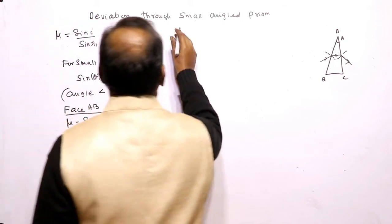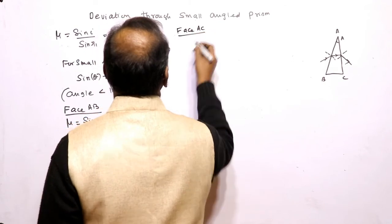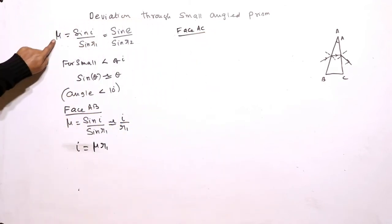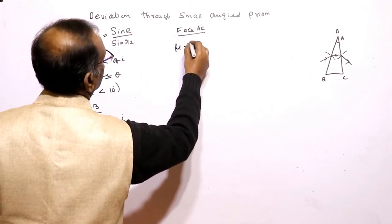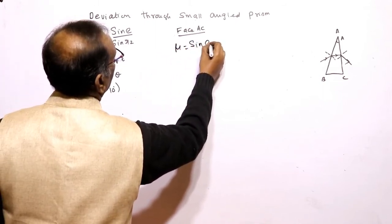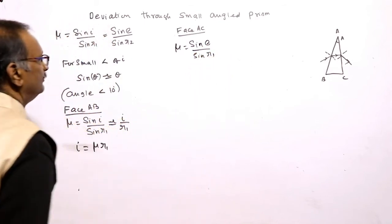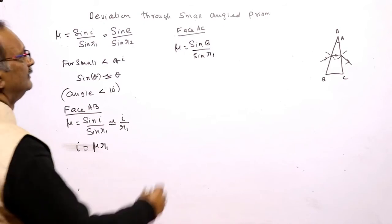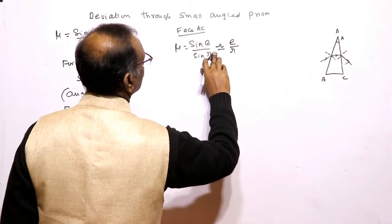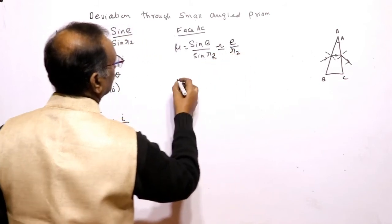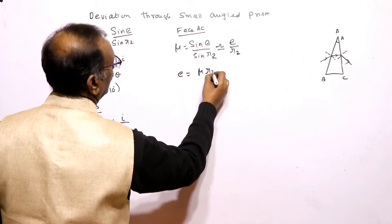Same way, for the face AC, mu is equal to sin E divided by sin R2, which is approximately equal to E divided by R2. Therefore, E is equal to mu into R2.